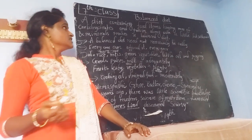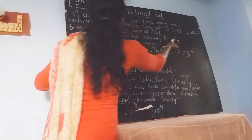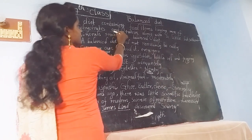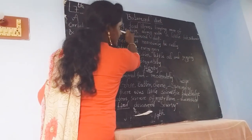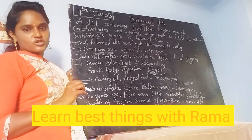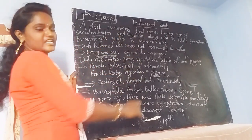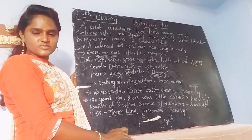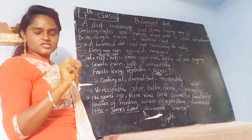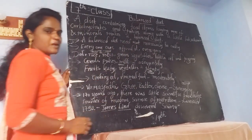What is the definition of balanced diet? A diet containing food items having more of carbohydrates and proteins, along with little fats, vitamins and minerals, and some little amount of roughages and water makes our balanced diet. Mainly three in more quantities — carbohydrates, proteins — and in little quantities like fats, vitamins, minerals makes a balanced diet.